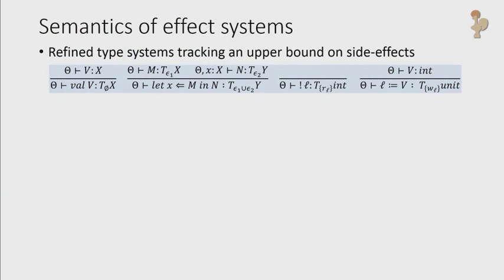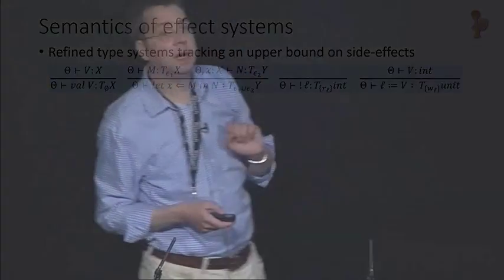So second thing, very closely related again, semantics of effect systems. So ML has complicated equational theory. Lots of equations you'd like to hold don't actually hold in general because you don't know that things don't have lots and lots of side effects. Most ML programs don't have lots and lots of side effects. So what you want to do is crank up your type system to track a safe upper bound on the side effects that things have. So if you know more about the possible side effects things you can have, you can prove more equations. And this is the kind of thing that you get.